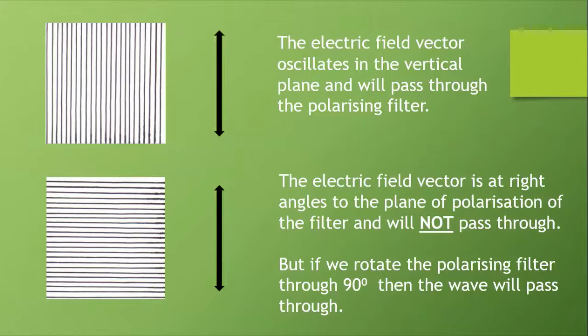Top diagram: the electric field vector oscillates in the vertical plane and will pass through the polarizing filter. Bottom diagram: the electric field vector is at right angles to the plane of polarization of the filter and will not pass through. But if we rotate the polarizing filter through 90 degrees, then the wave will pass through.